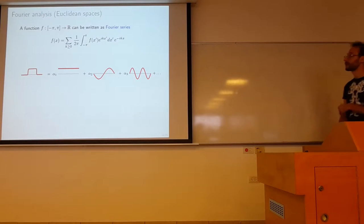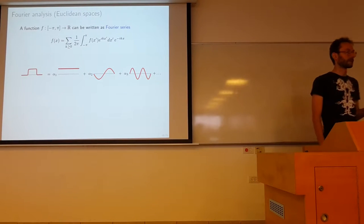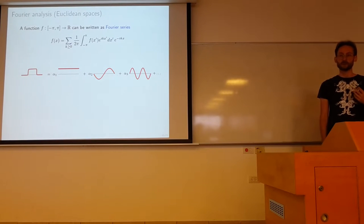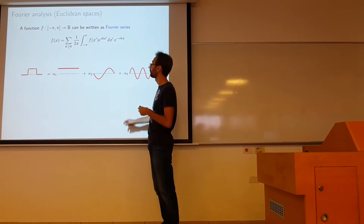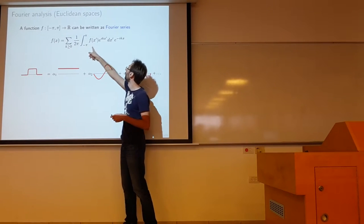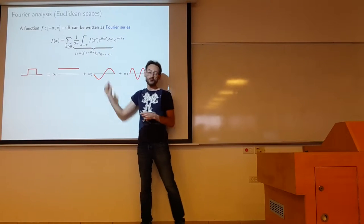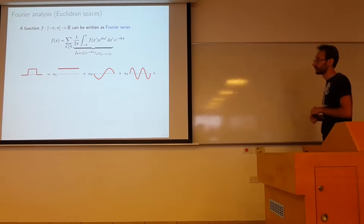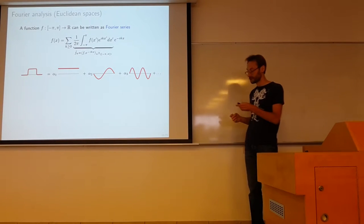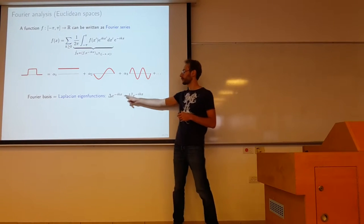Why is the Laplacian important? Because it allows you to define Fourier analysis. On the Hilbert space, compact and self-adjoint operators have orthogonal eigenfunctions that form a basis of the Hilbert space — that's exactly the idea of Fourier analysis. If you take a function on a compact set, say the interval between minus pi and plus pi, you can decompose it into a Fourier series. The Fourier coefficients are just the projection of the function onto the Fourier basis, which in this case happen to be complex exponentials. What is somehow not always taught is that these complex exponentials are just eigenfunctions of the Laplacian operator — in one-dimensional Euclidean space, just the second-order derivative.